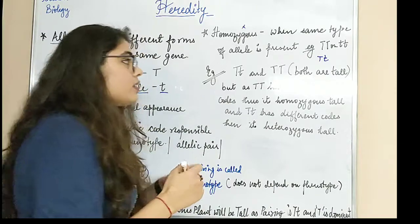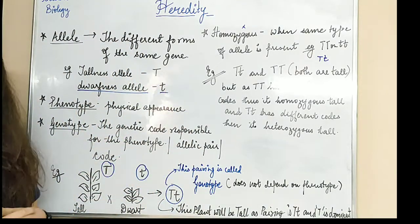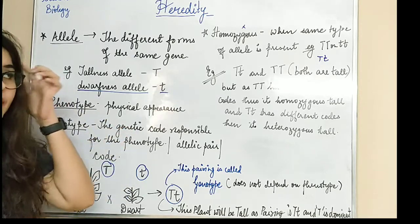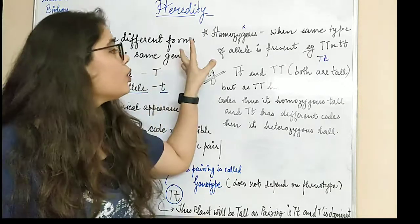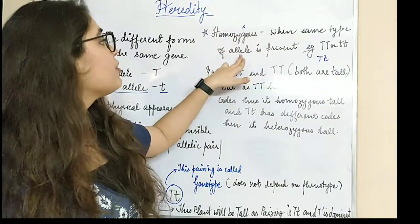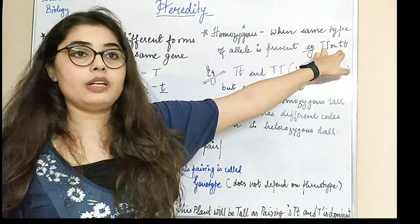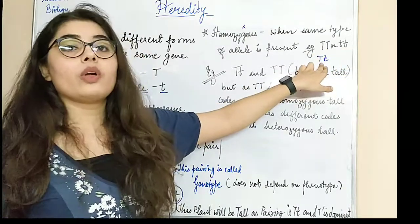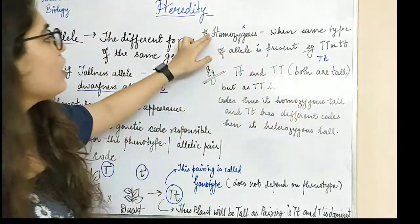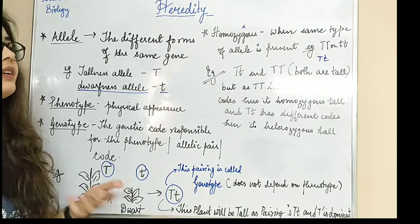When it is capital T, small t — two different alleles — then it becomes heterozygous. Homo means same, hetero means different — you need to memorize this or you will forget. Homozygous means same type of allele is present: capital T, capital T, or small t, small t. If capital T, small t — those are two different things — then it is not homozygous, it becomes heterozygous.